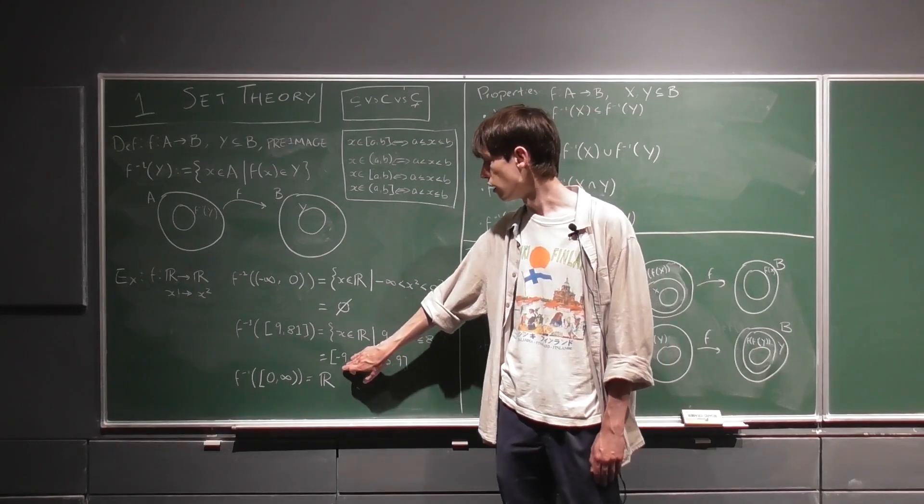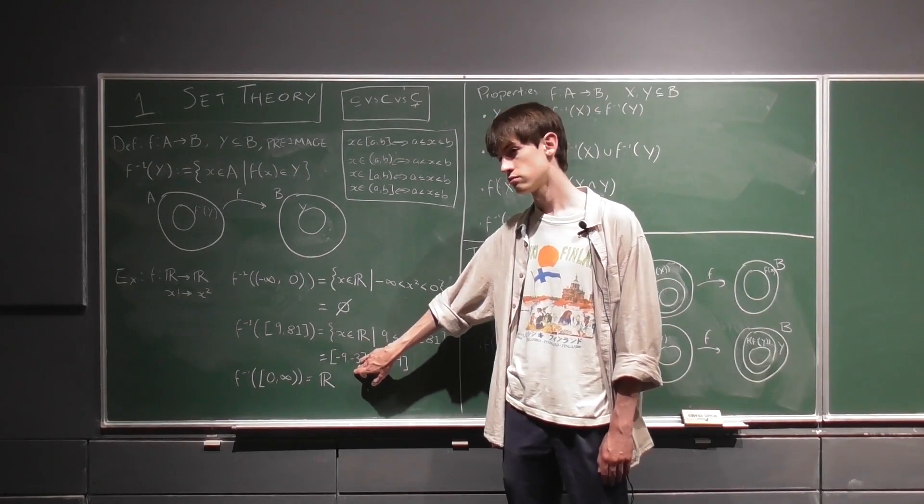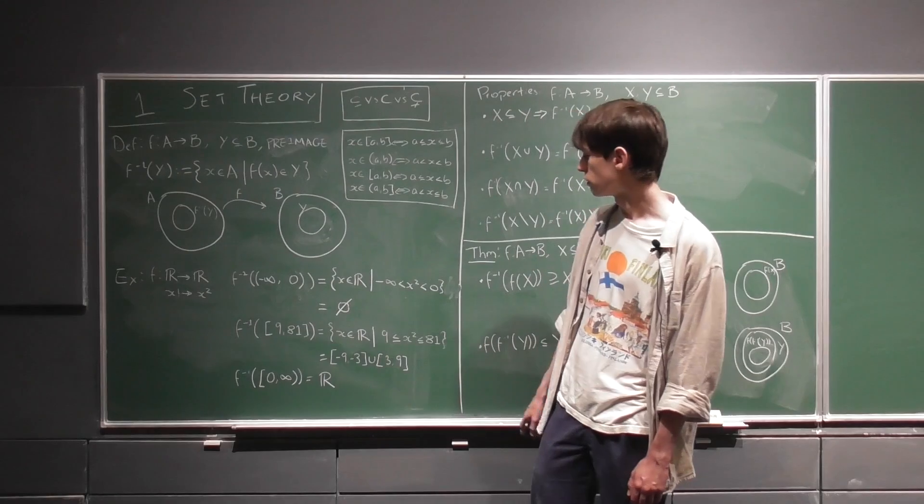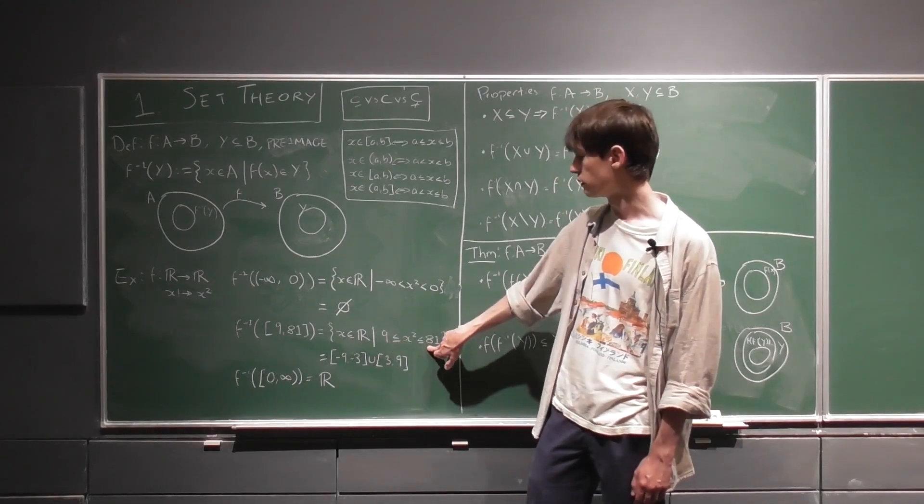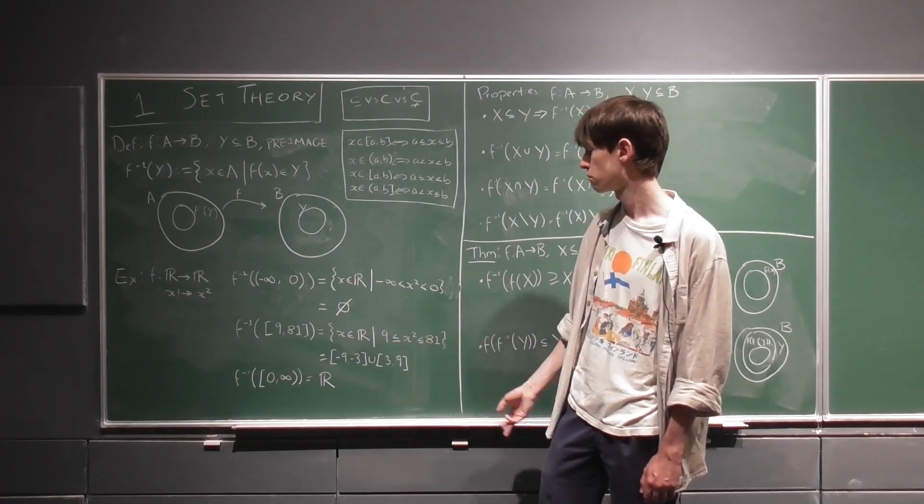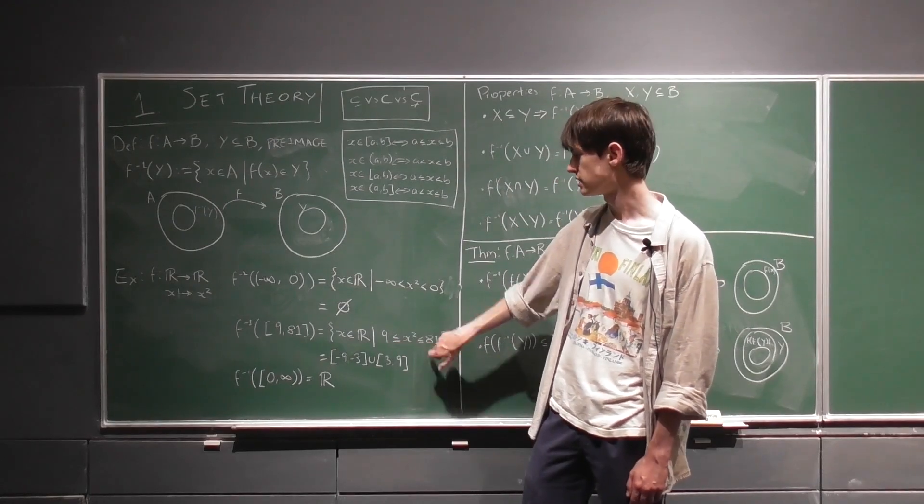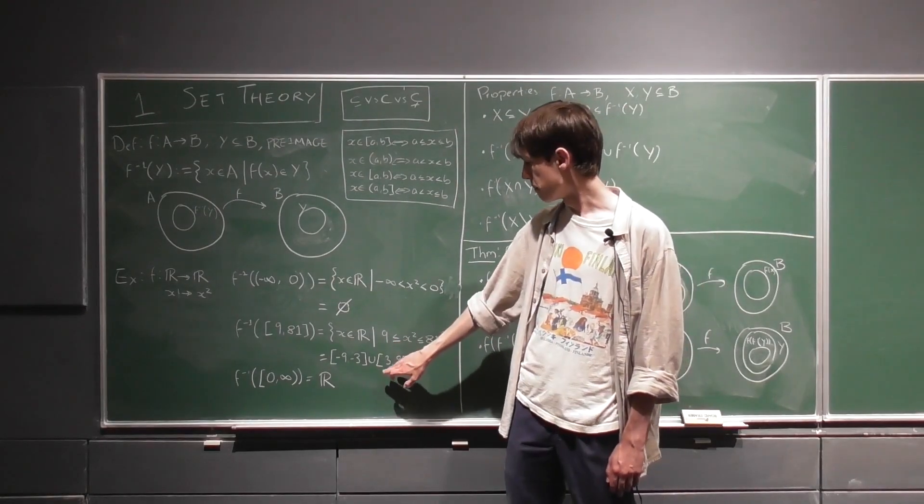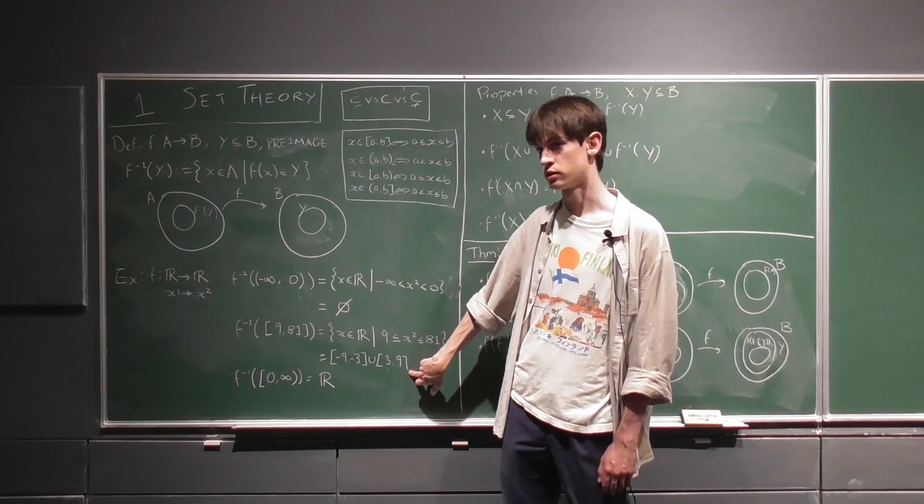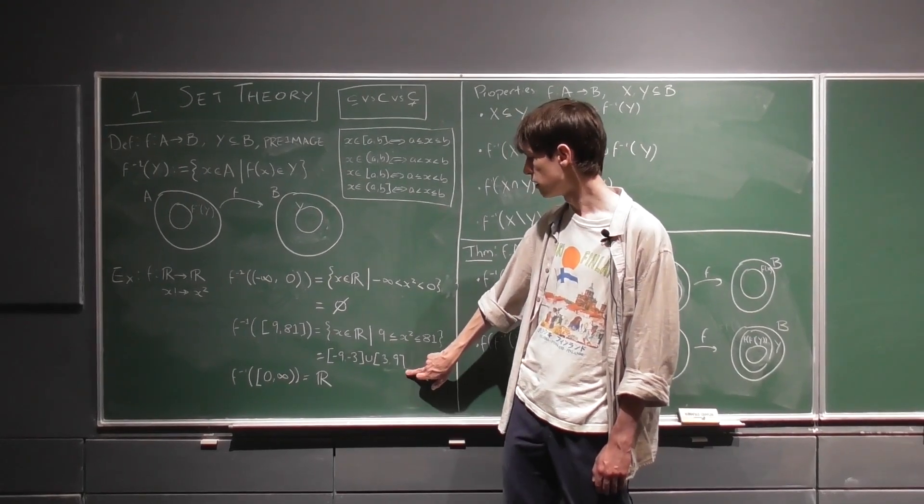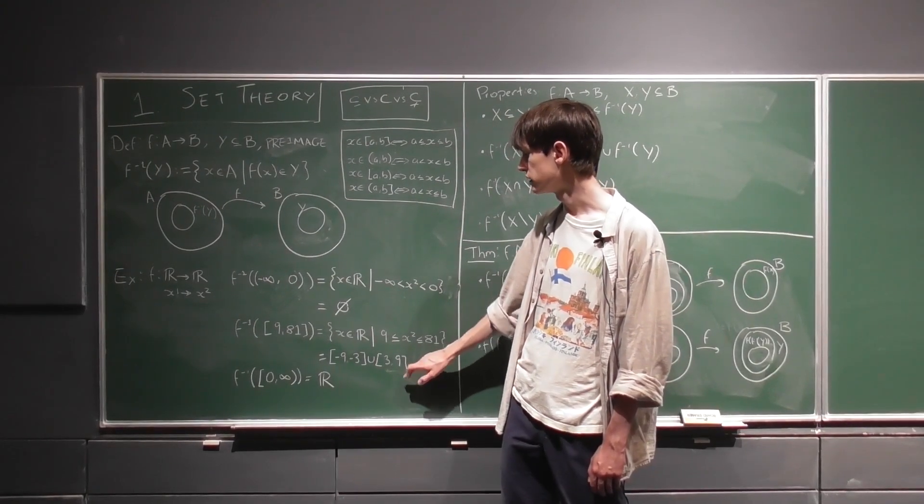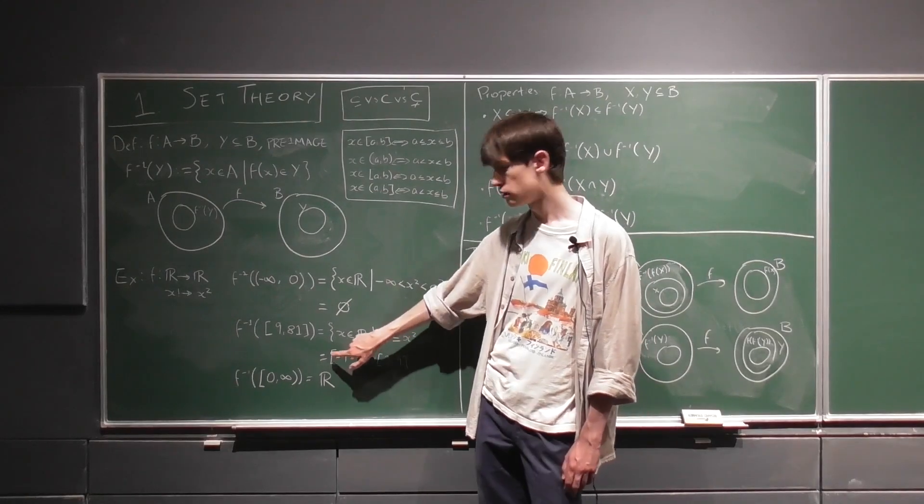That's because minus 9 squared is 81. All the numbers up to minus 3 squared will lie between 9 and 81, so minus 6 will go to 36, which lies in this interval. And then again, all positive numbers, which is a little more obvious to see. But because it's x squared, we need to be more careful and remember that it's both sides.